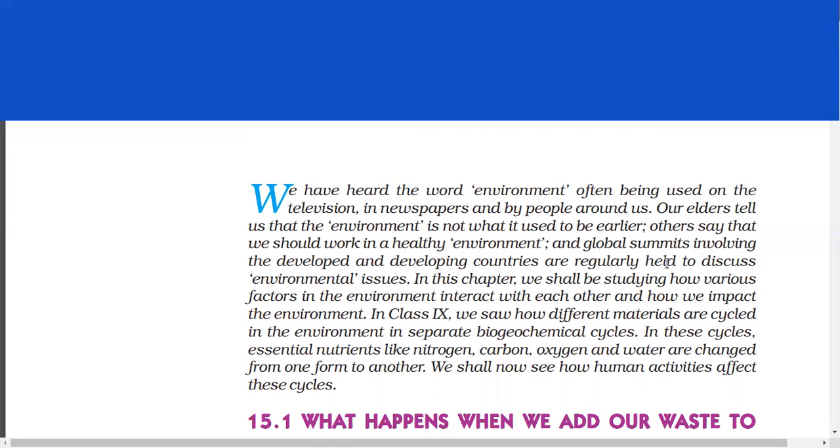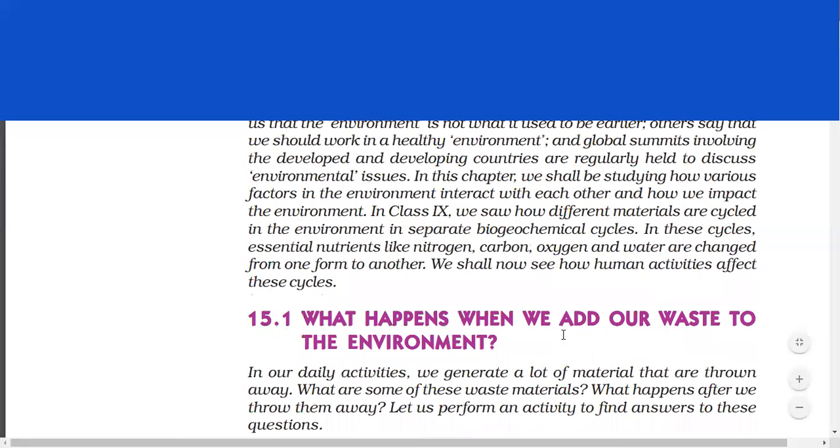In this chapter we shall be discussing how various factors in the environment interact with each other and how we impact the environment. In class 9, we saw how different materials are cycled in the environment in separate biogeochemical cycles. In these cycles, essential nutrients like nitrogen, carbon, oxygen and water are changed from one form to another. We shall now see how human activities affect these cycles.